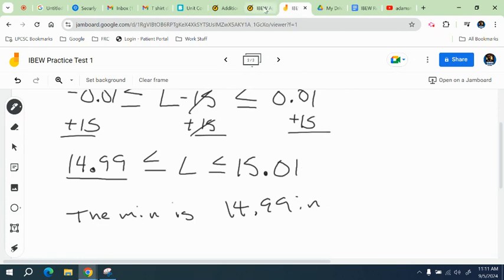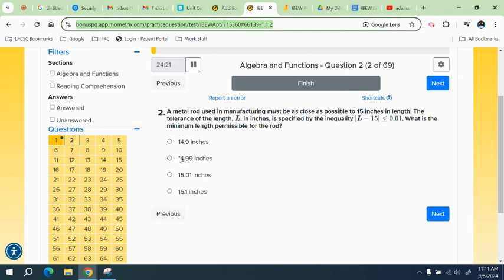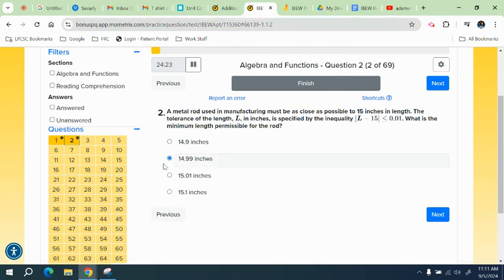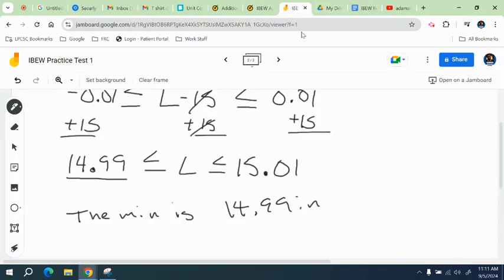And then we can double check that. If I just go on this website and I put 14.99 as one of the solutions. I don't know. We'd have to finish the whole thing to see if it's right or not. Okay? So that's what we have on that one.